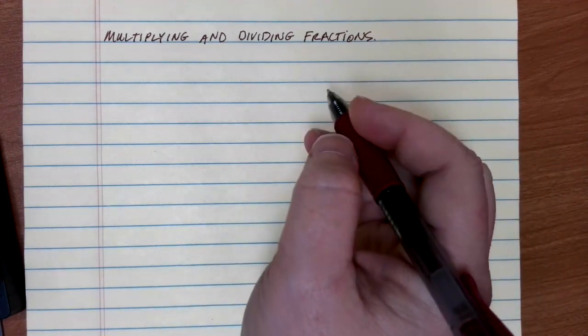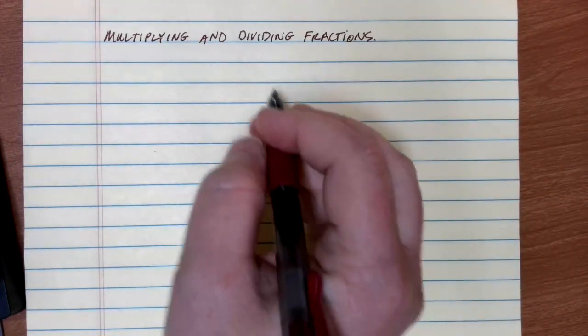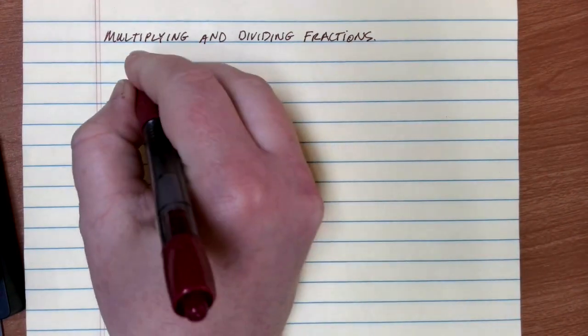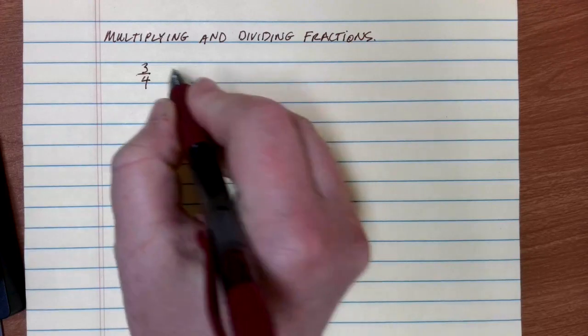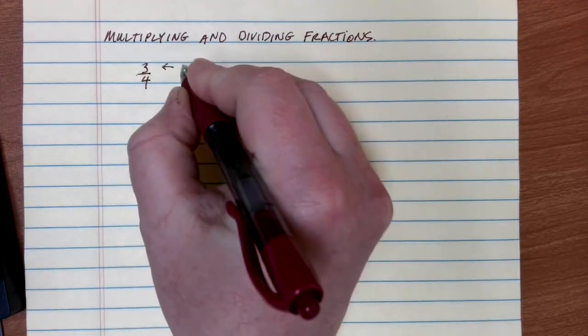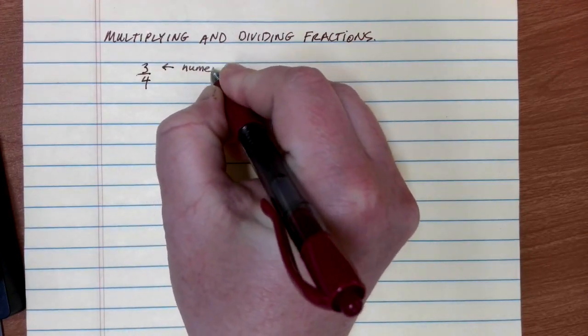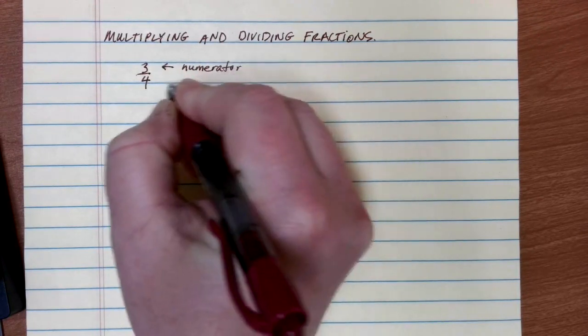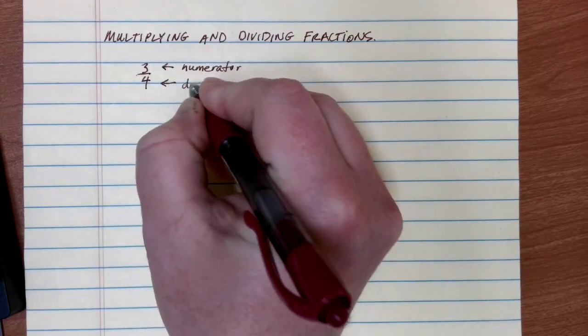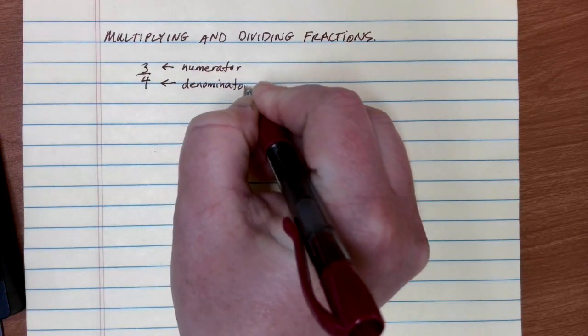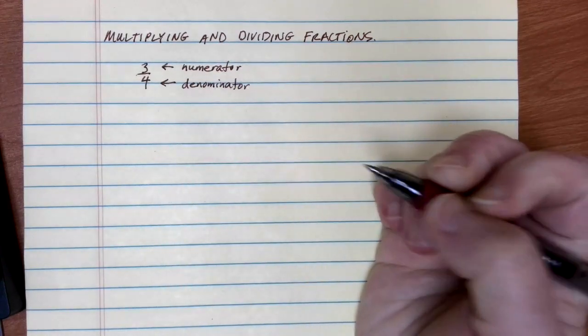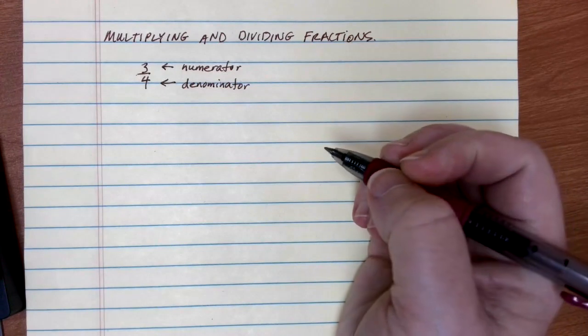Before we talk about multiplying and dividing fractions, let's look at a little bit of fraction vocabulary. Here's an example of a fraction, three-fourths. Remember that the top number is called the numerator and the bottom number is called the denominator. I go back and forth between using numerator and top, and denominator and bottom, but they're great vocabulary for you to be familiar with.